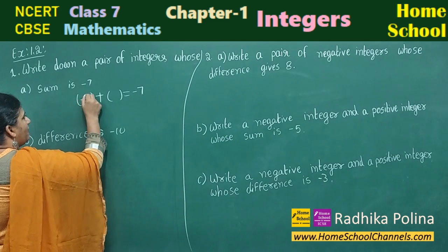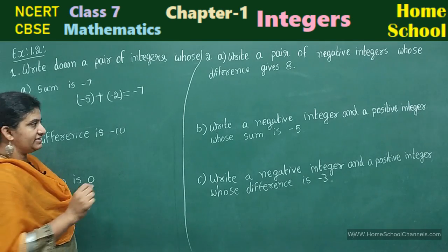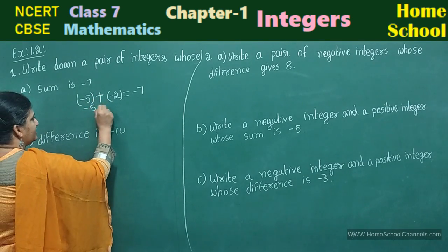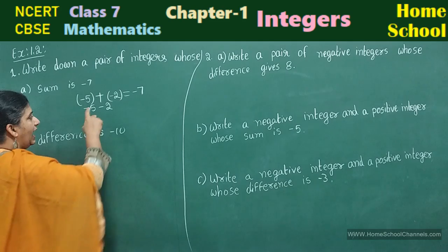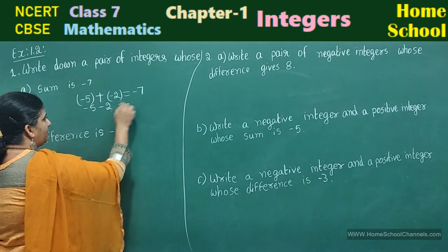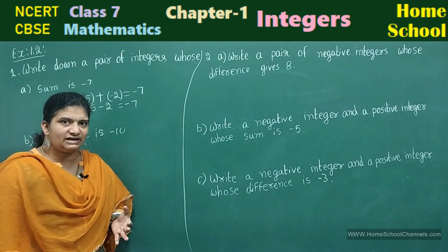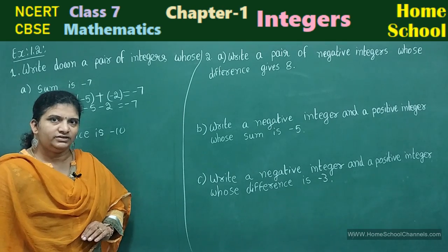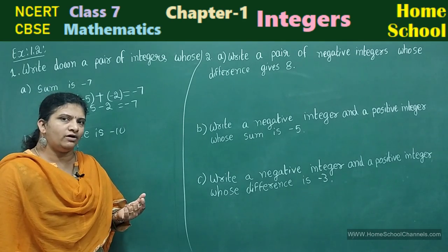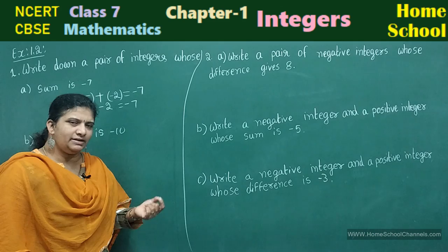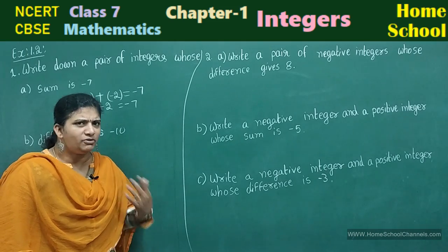Let me take the two integers as minus 5 and minus 2. Minus 5 and minus 2 are the two integers. Remove from bracket: minus 5 plus into minus, minus 2 — both numbers have a negative sign. Take the negative sign and add the numbers: minus 5 plus 2 will be 7, so minus 7. You can also take minus 10 plus 3, which gives minus 7. Practice some more examples in your rough notes.